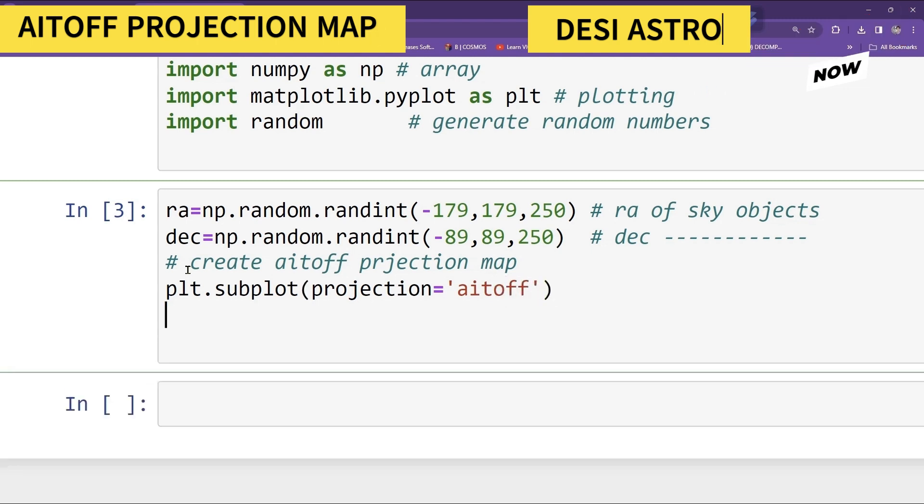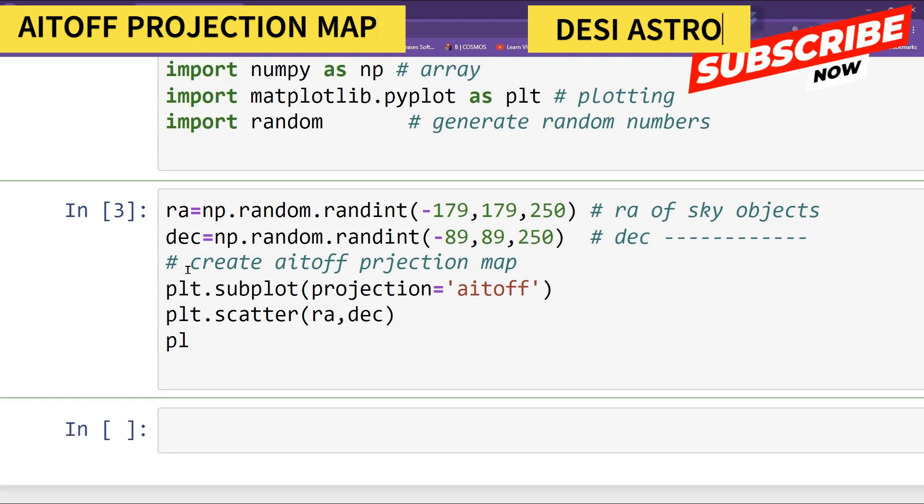And then I will type here plt.scatter, X RA, comma DEC. RA and DEC. Then plt.show.